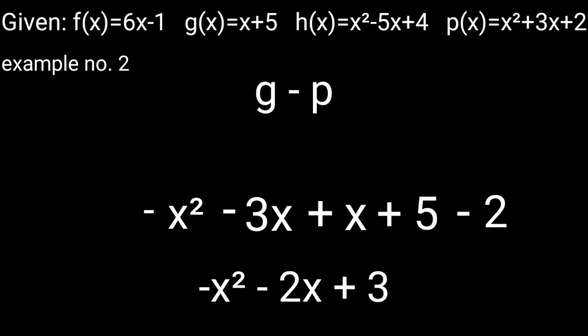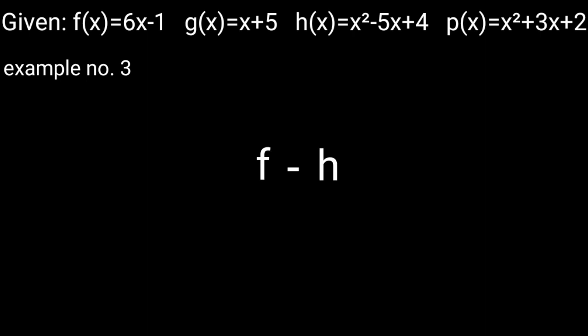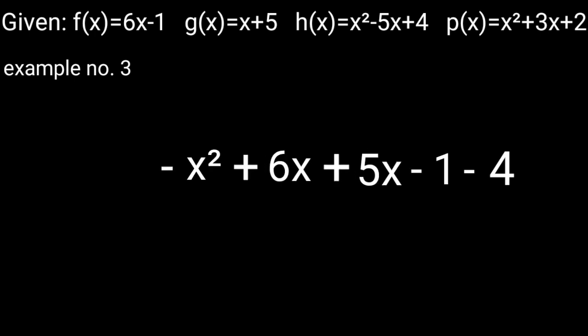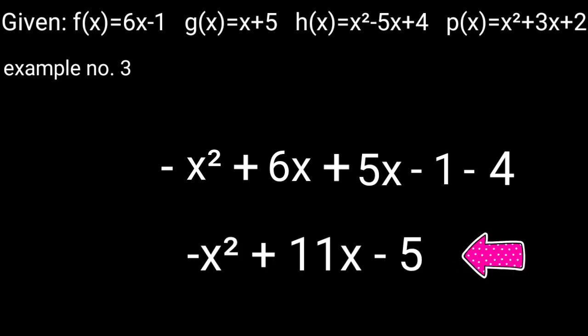Example 3: f − h — substitute f with 6x − 1 and h with x² − 5x + 4. The equation is 6x − 1 − (x² − 5x + 4). Apply the distributive property: 6x − 1 − x² + 5x − 4. Combine like terms: −x² + 6x + 5x − 1 − 4. The final answer is −x² + 11x − 5.